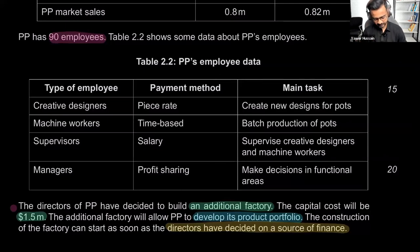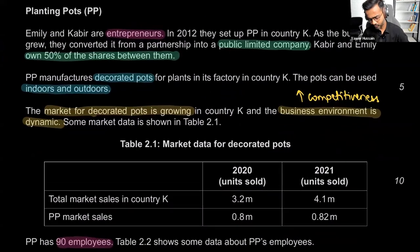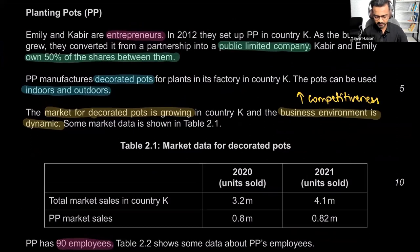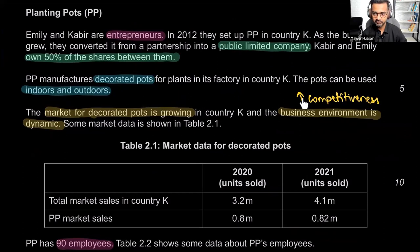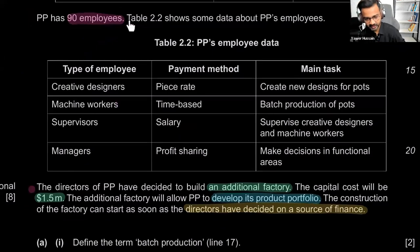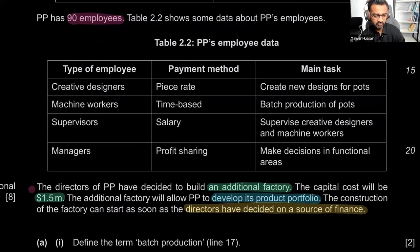That is the case study. To quickly recap: the company is PP, a public limited company. Half the shares are owned by the original partners. They sell decorated pots. The market is growing but bringing more competition, shown by the numbers in Table 2.1. There's an HR discussion where different employees are paid differently — we'll see if that matches their main tasks. In response to growing demand, there's an intention to build a new factory for $1.5 million.